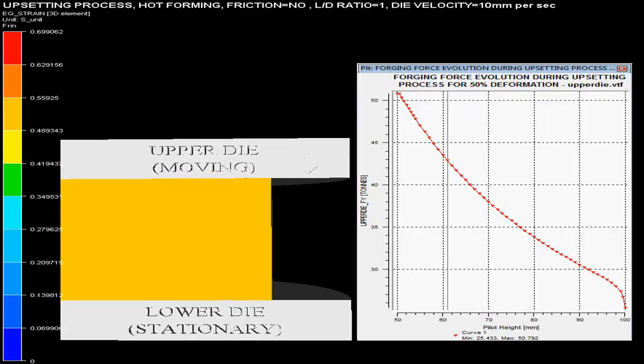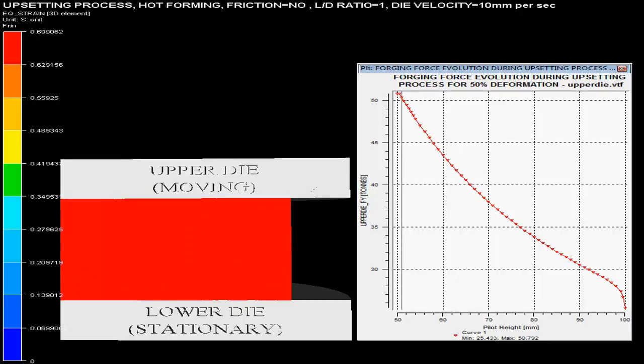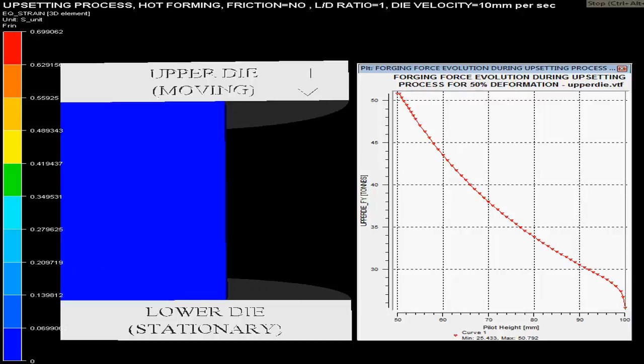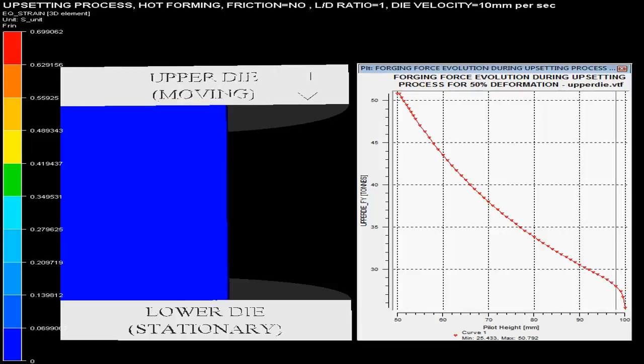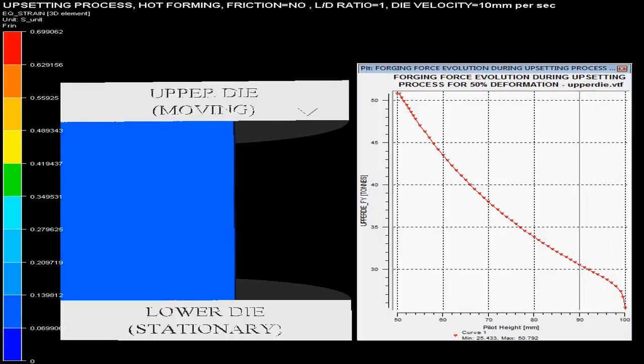On the right hand side, one could see the graph of forging force on upper die versus billet height, showing the forging force evolution during upsetting process of 50% deformation. Die scale on left hand side describes the equivalent strain in billet changing during the process.